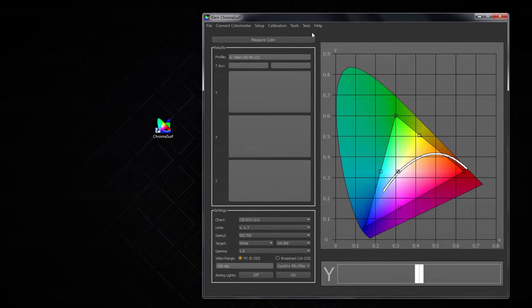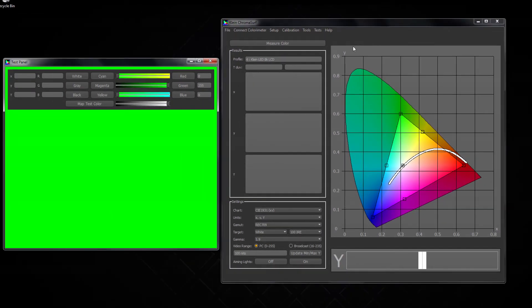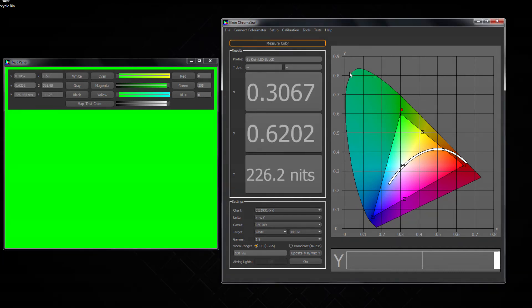Now we can get our first measurement. Go to tools and open the test panel. This is the area of the screen we will measure. Make sure the K10A is pointed only at this panel. Now if we hit measure color, we get our XYY values.